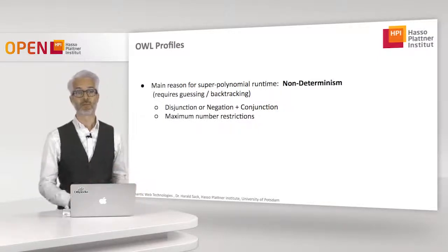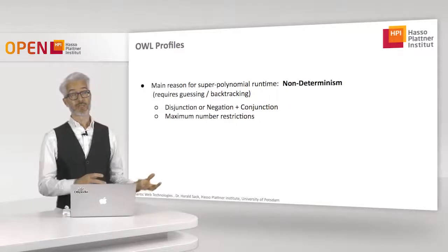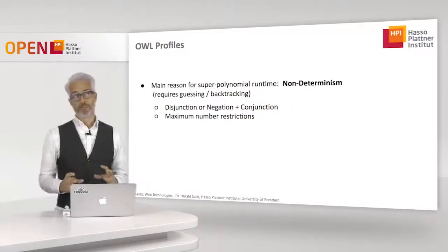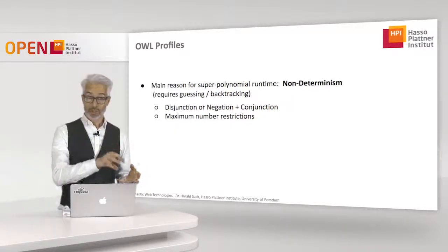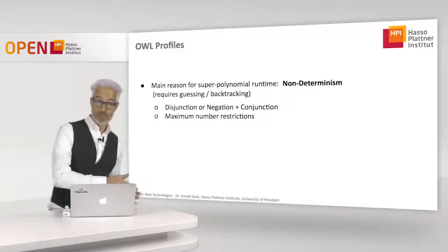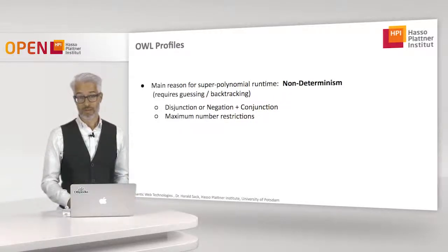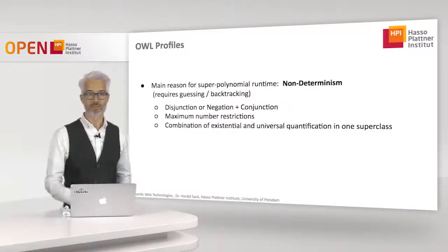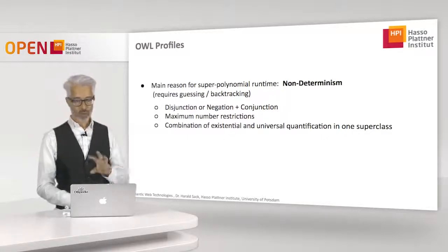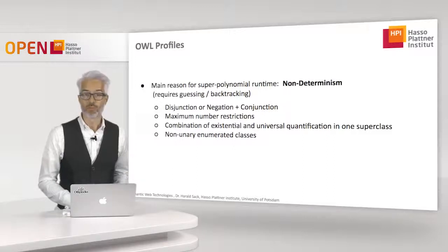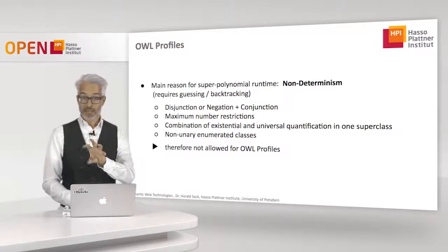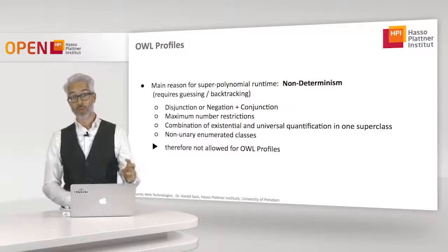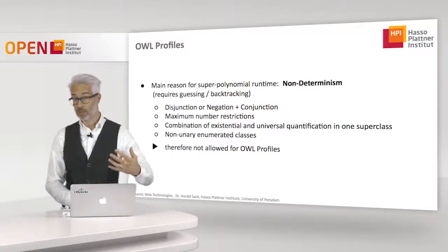The same applies to maximum number restrictions: you find three instances, then check all remaining ones for satisfiability — again superpolynomial runtime. Similarly, a combination of existential and universal quantification within a single superclass, or non-unary enumerated classes, also cause superpolynomial runtime. All these constructs are not allowed in the OWL profiles, which aim for polynomial runtime.